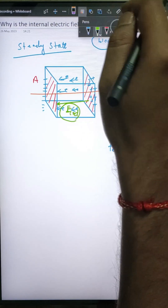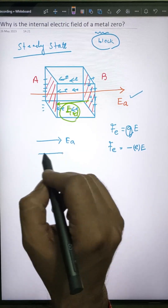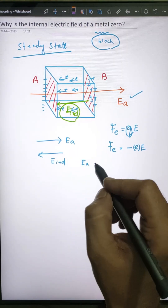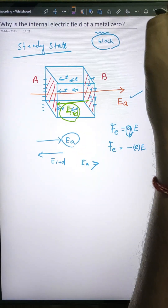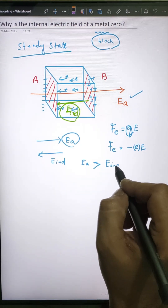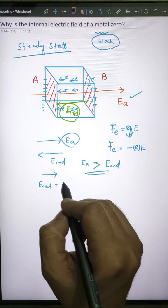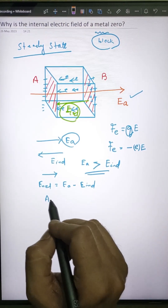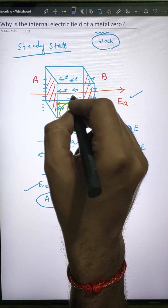Now we have an applied electric field and an induced electric field. As long as the magnitude of the applied electric field is greater than the induced electric field, a net field will exist — that will be E_a minus E_induced, directed from A towards B. As long as this net field exists, electrons will keep on moving.